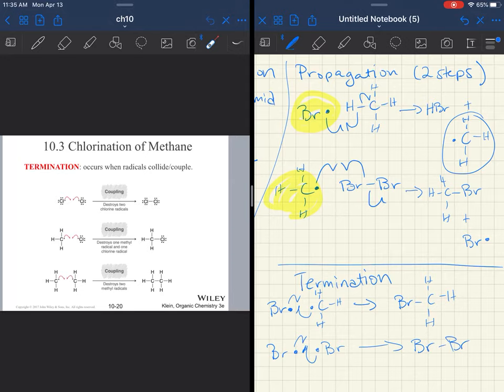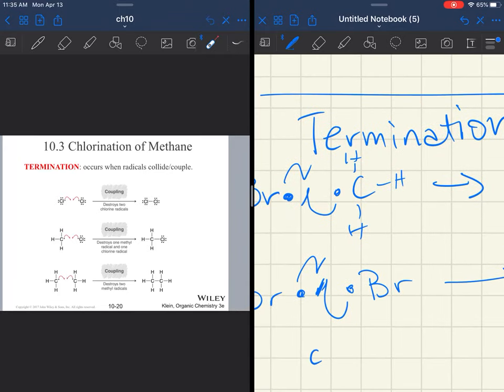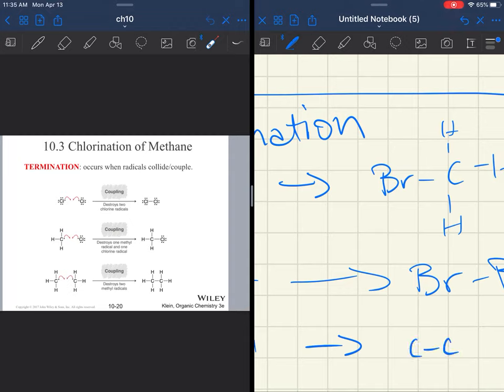If bromine runs into another bromine radical—and you should put the arrows in—this is just a coupling reaction, then you make a little bit more Br2. And that can go back into the reaction. The one that's a little bit different here, and I'm going to blow this up so I can draw it, is you might also make a very small amount of ethane.